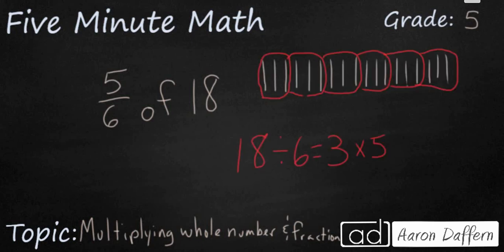Hopefully you drew eighteen lines here and you divided it into six equal groups, because you need to break it up into sixths. That should give you groups of three. And so you take five of those groups of three, and you get one, two, three, four, five times three is going to equal fifteen.